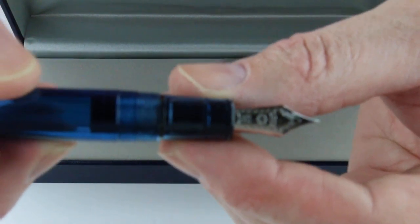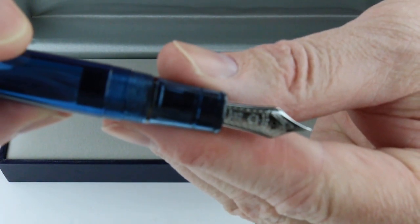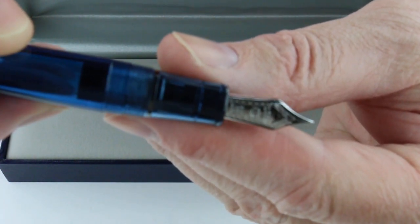It comes with a 21 karat gold nib that's engraved with the Sailor anchor logo and a black feed on the nib.